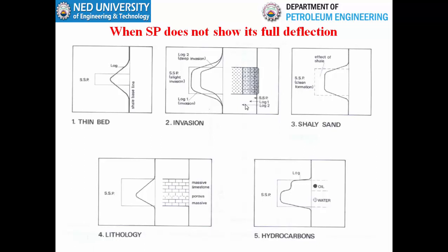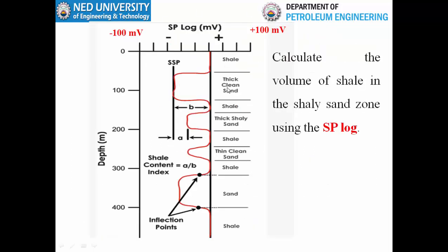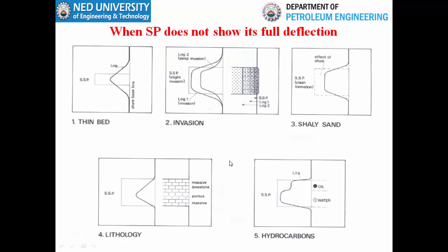There are reasons why the SP log does not always show its full deflection. Five reasons include: thin beds (zone not thick enough), invasion (deep mud invasion), shaly sand (sandstone not clean, contains shale in matrix), lithology (resistive rock between porous zones), and hydrocarbons (porous and permeable formation contains hydrocarbon instead of water). Because of these five reasons we often do not see the full deflection.